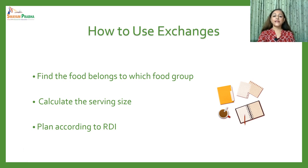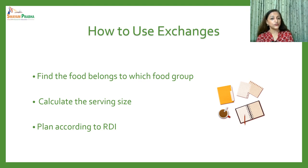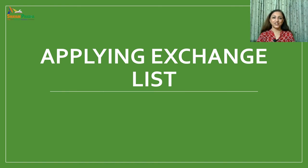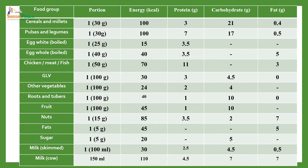To use the food exchange system: first identify which food group the food belongs to, then calculate the serving size that can be replaced with another food, and finally plan according to recommended dietary intakes. A consolidated table summarizes that one portion of cereals and millets, pulses, egg, chicken, fish, green leafy vegetables, other vegetables, roots and tubers, fruits, nuts, fats, sugar, milk, or skimmed milk each provides a specific amount of energy, protein, carbohydrate, and fat.